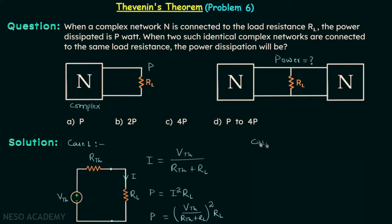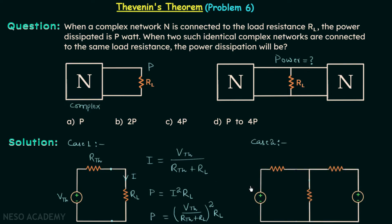Now moving to case 2. We have the same complex network repeated two times, and we can replace the two networks by this arrangement: VTH connected in series with RTH. So we have VTH, VTH, RTH, RTH, and the load resistor — giving us the simplified network for case number 2.